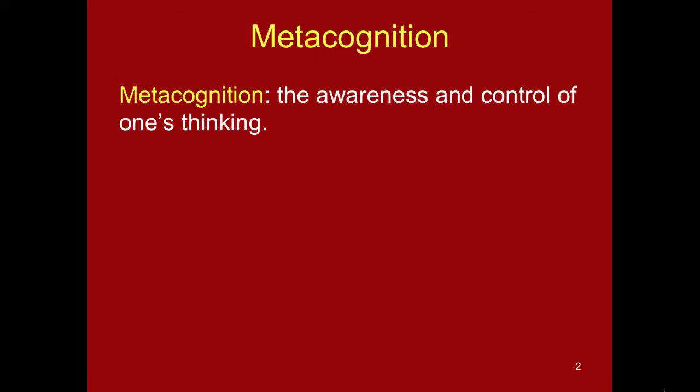Metacognition is the awareness and control of one's thinking, meaning there is both a knowledge and a control component. The knowledge component refers to what a learner knows about cognition, including the knowledge about themselves as a learner, about aspects of the task at hand, and about strategies needed to carry out the task effectively.